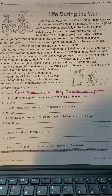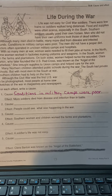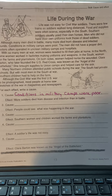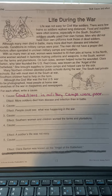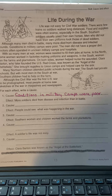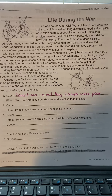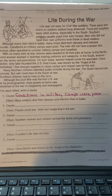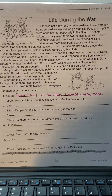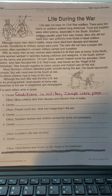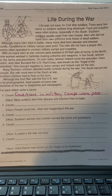Life during the war. Life was not easy for Civil War soldiers. There were few trains, so soldiers walked long distances. Food and supplies were often scarce, especially in the south. Southern soldiers usually used their own horses. Men who did not have their own uniforms took those of dead soldiers. Although many men died in battle, many more died from disease and infected wounds.